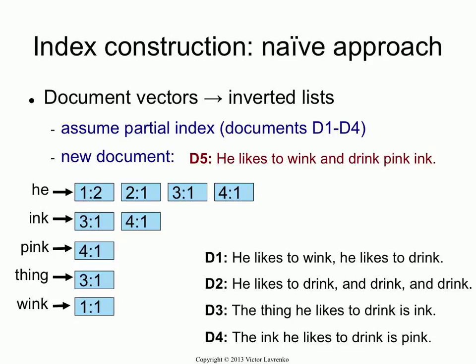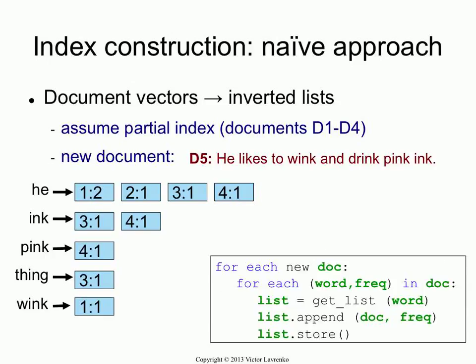So a new document comes in — document 5 — and what I want to do is update my index with the contents of that document. The simplest way to do that: you take this new document, break it up into words and into word-frequency pairs, because it's a regular index and you don't care about positions. For each word-frequency pair, you fetch the inverted list, append the document and frequency tuple to that list, and then write that list back to disk or into memory.